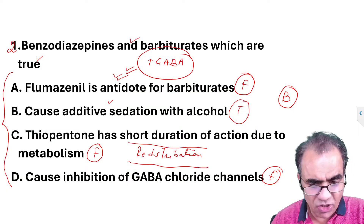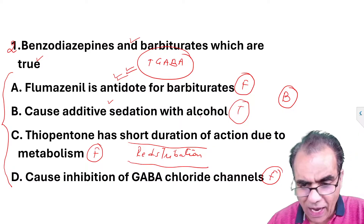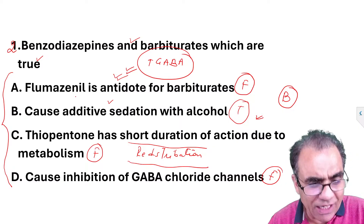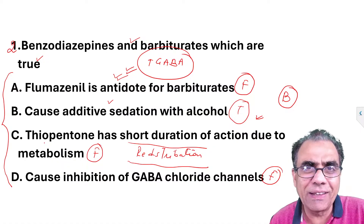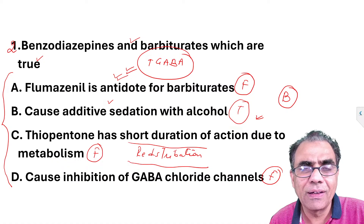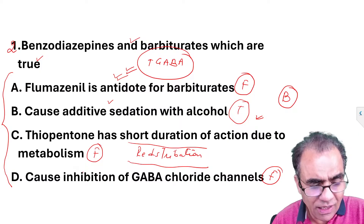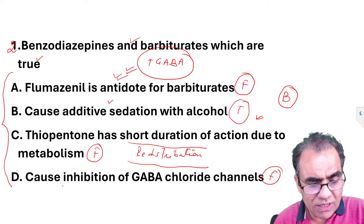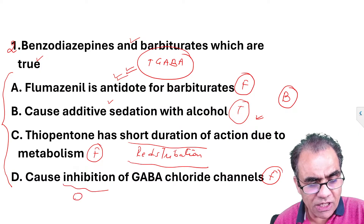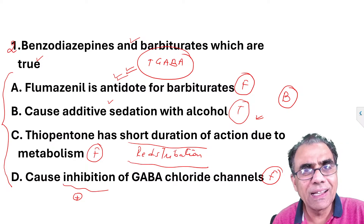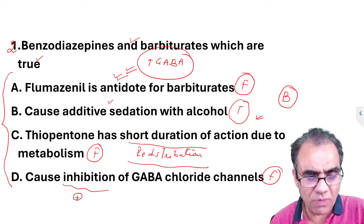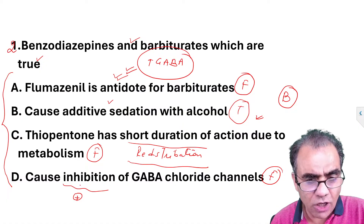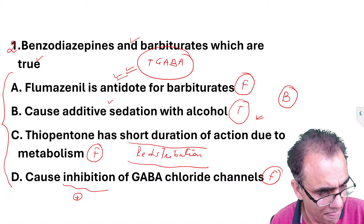If option B was not among the choices given, then there may be something related to the choices — what I received may not be fully correct. It may be that instead of 'inhibition' it says 'stimulation' or something like that. If these are the choices, then B is the only correct answer, so maybe there's some error related to the choices provided.